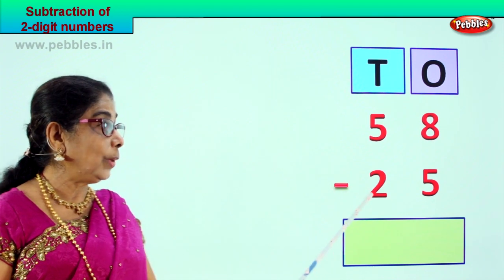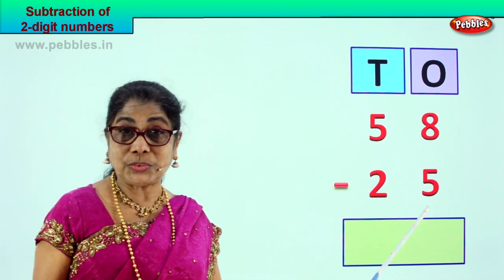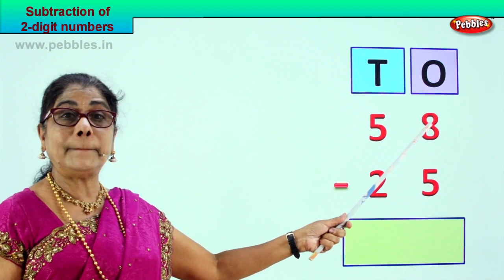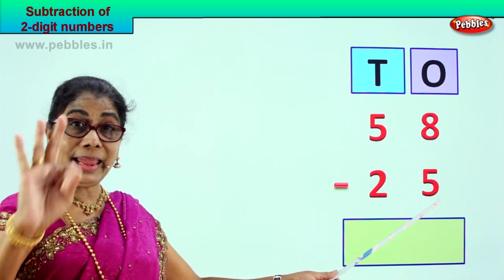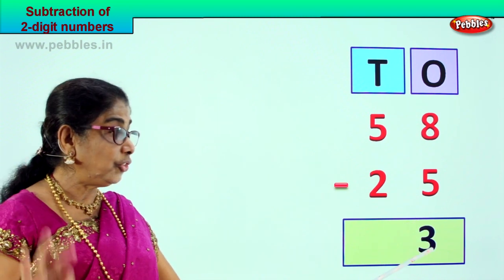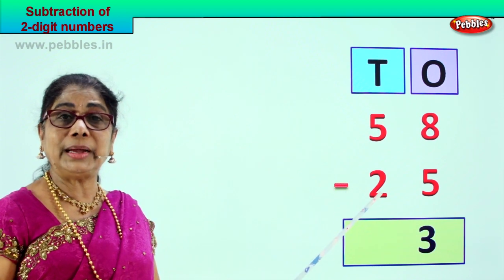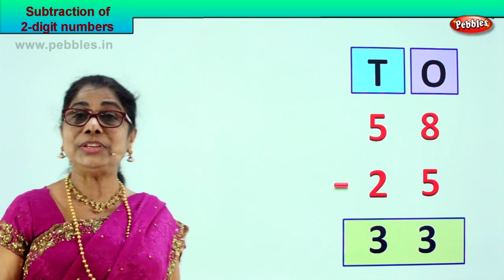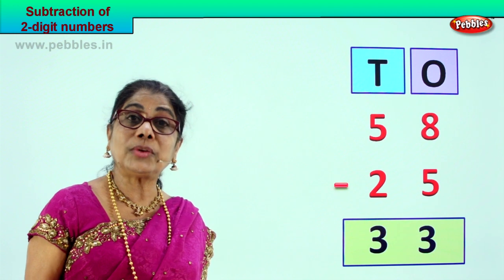58 take away 25 — 58 minus 25. Five tens, eight ones, two tens, five ones — we have put them in ones and tens order. Go to the ones place: eight minus five — five, six, seven, eight — eight take away five is three. Then the tens: five take away two — one, two — five minus two is three. Your answer is 33. 58 minus 25, your answer is 33.